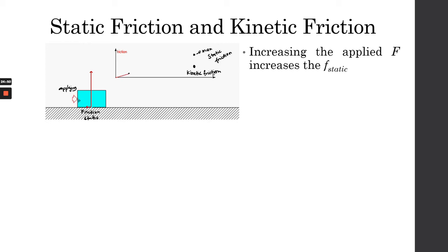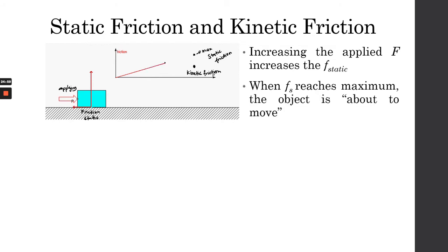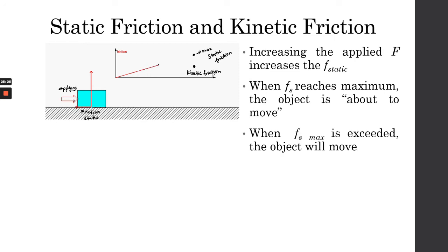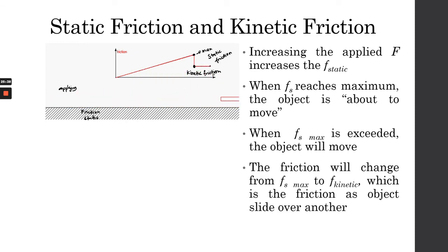Just as a summary: increasing the applied force increases the static friction. When the static friction reaches the maximum value, the object is about to move. Once the maximum static friction is exceeded by the applied force, the object will move and the friction will change from maximum static friction to kinetic friction, which is the friction as the object slides over another surface.